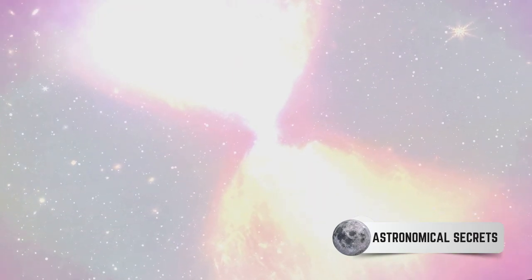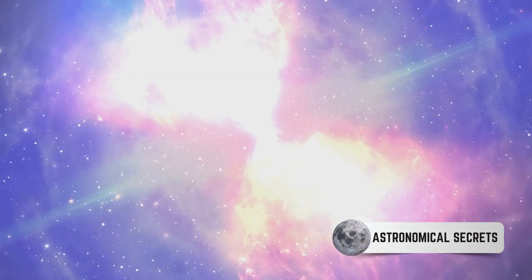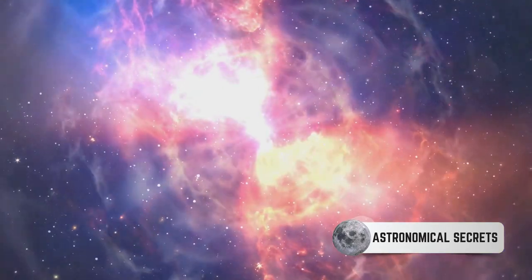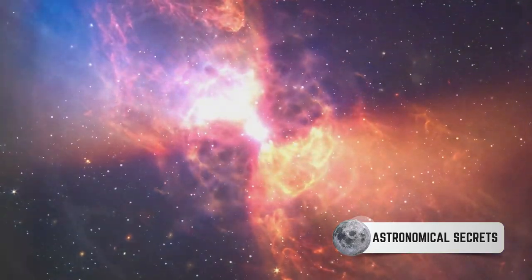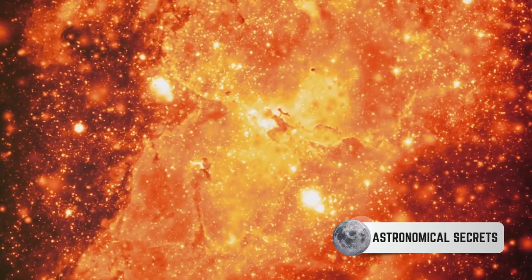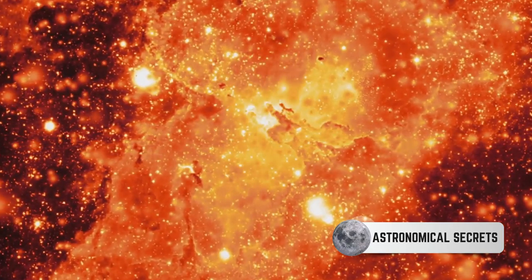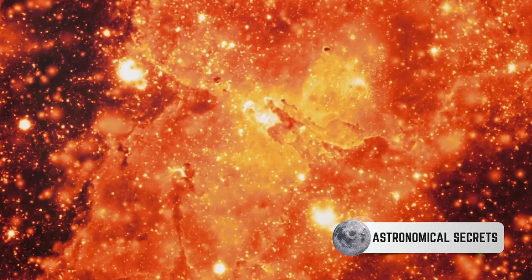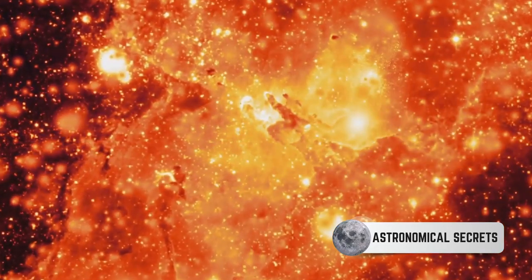However, every star has a life cycle, and for these massive stars, their end comes in a violent explosion known as a supernova. When the star has exhausted its nuclear fuel, it can no longer sustain the delicate balance between the inward pull of gravity and the outward push of pressure. This imbalance leads to a catastrophic collapse resulting in a supernova.